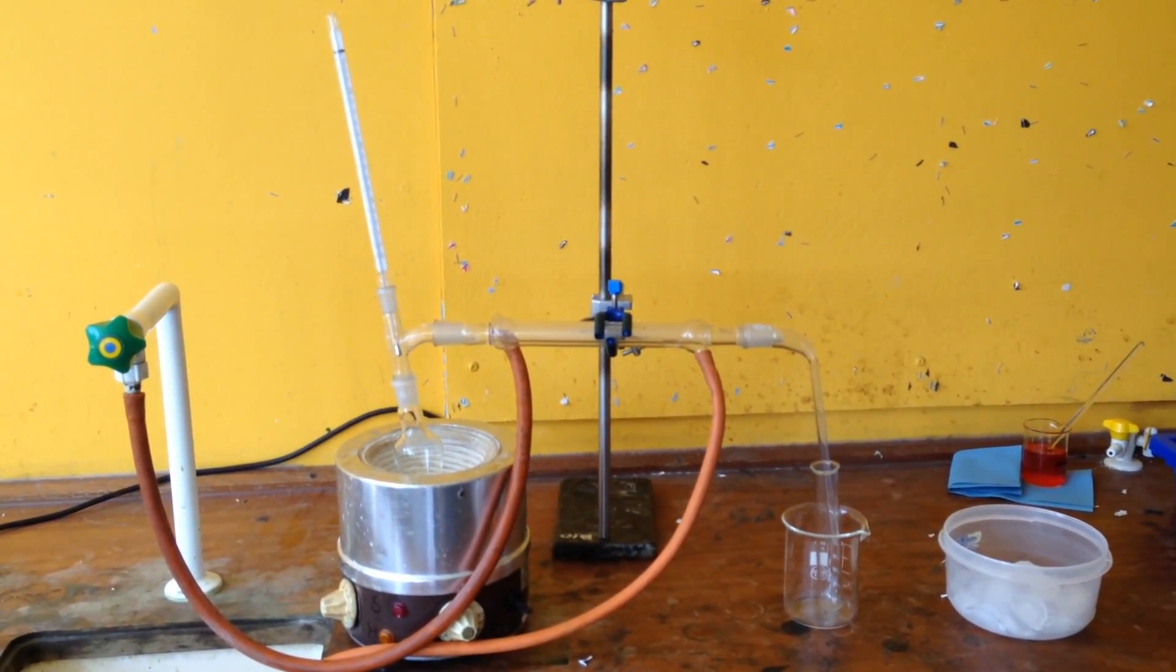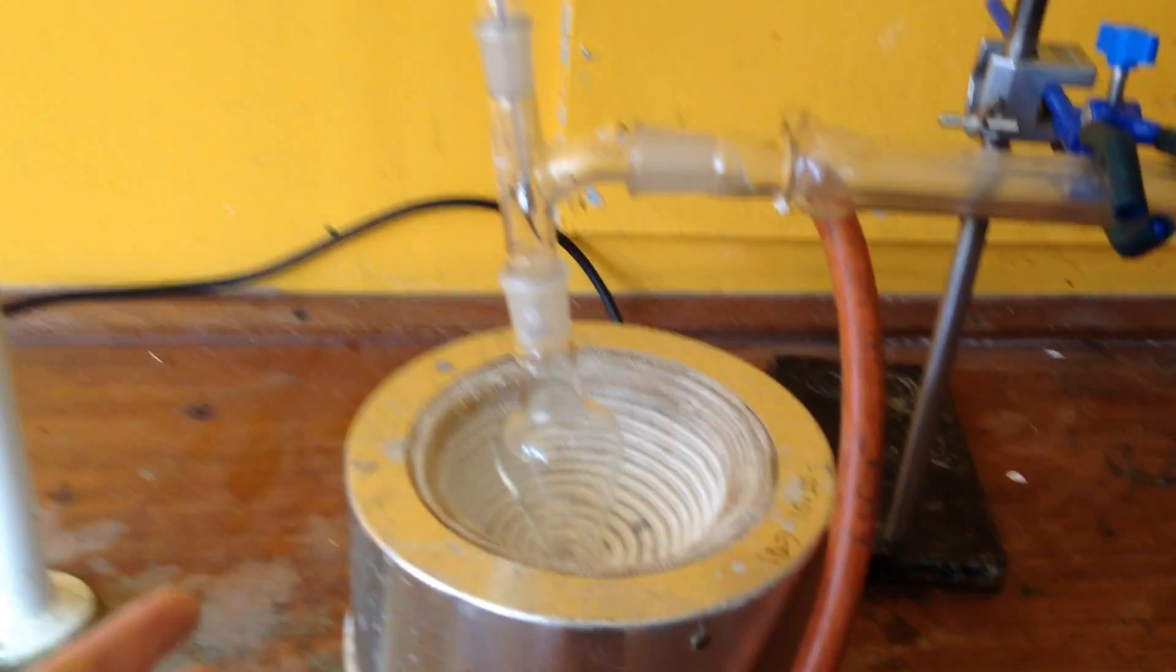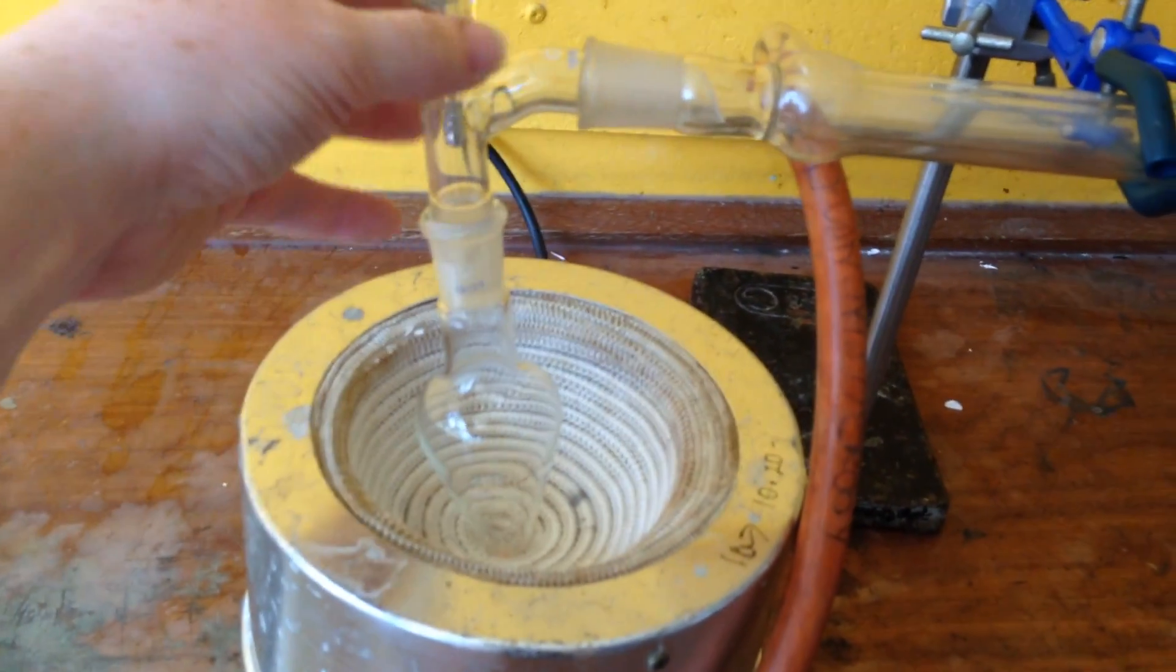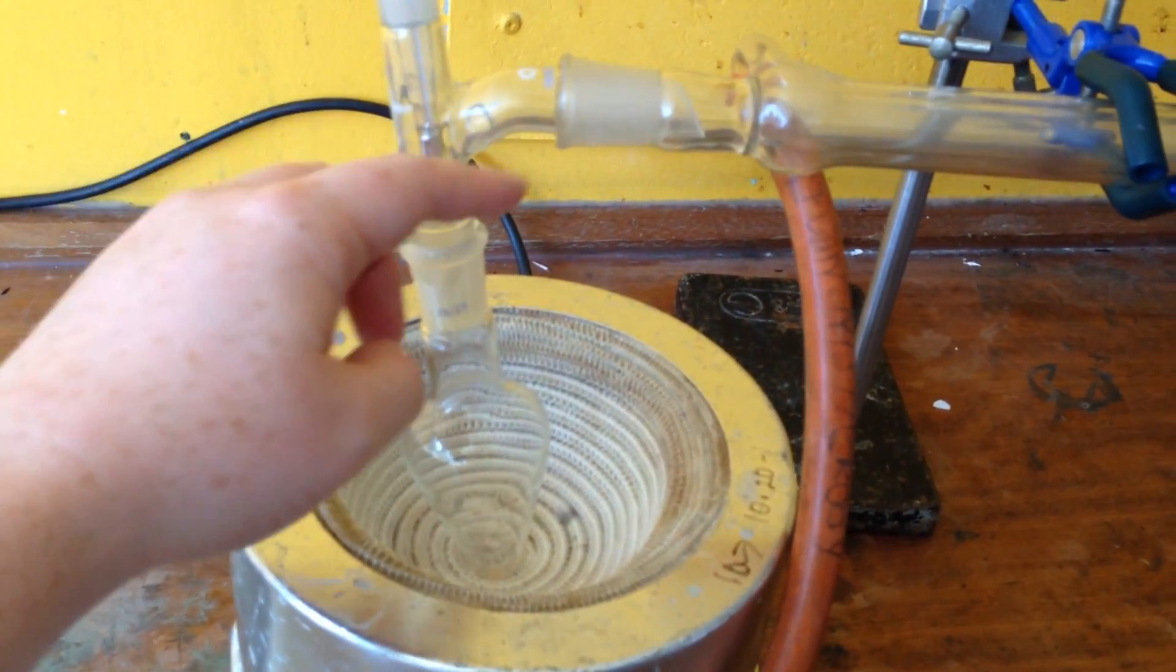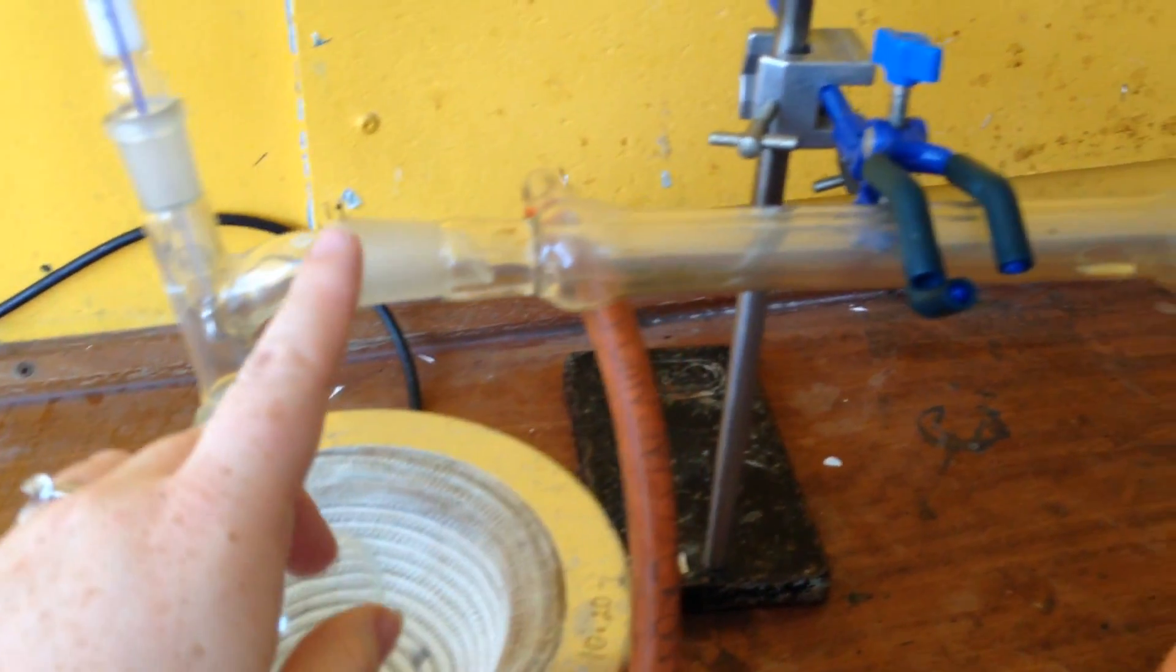So here we have the quick fit glassware set up for the distillation. I have the fancy heating apparatus, the pear shaped flask going into the adapter here with the thermometer at the top there so I can check the temperature.